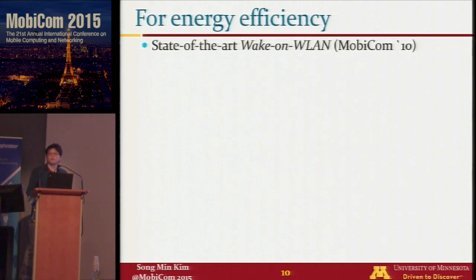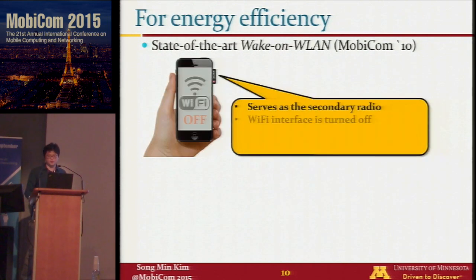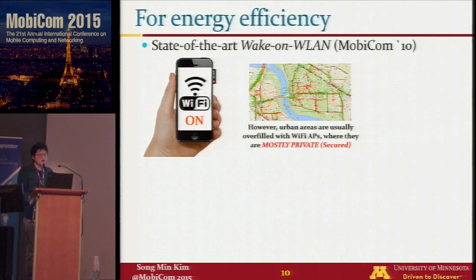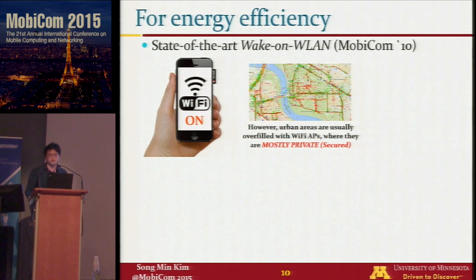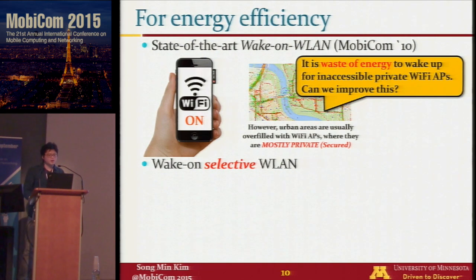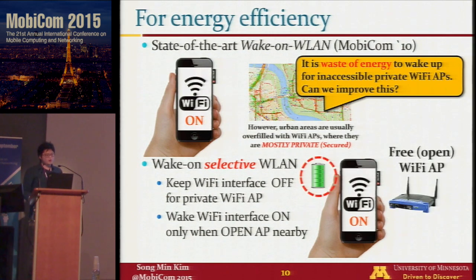Freebie can also be used for energy efficiency in mobile phones. We consider state-of-the-art work on WLAN introduced in MobiCom '10 where a ZigBee module and SD card inserted into a mobile phone serve as a secondary radio — the WiFi interface is turned off and ZigBee wakes up WiFi when it detects nearby APs. However, urban areas are overfilled with private or secure WiFi, so it's wasteful to wake up for inaccessible APs. With Freebie, we propose wake-on-selective-WLAN — keeping WiFi off for private APs and turning it on only when open APs are nearby.